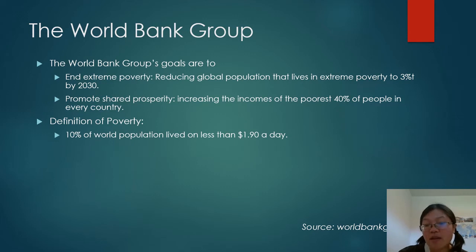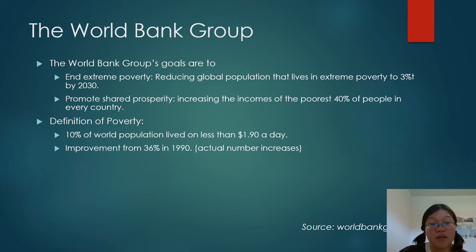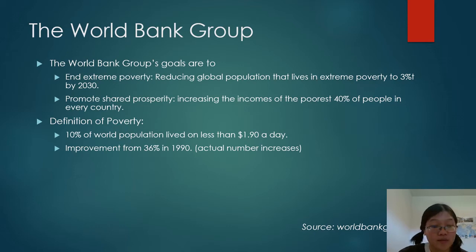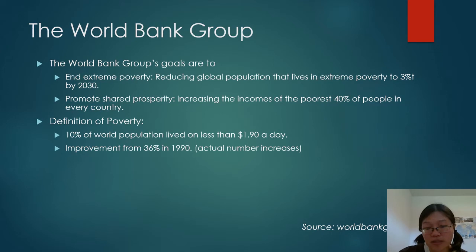This is how they define poverty: people who live on less than $1.90 a day. According to them, 10% of the world population currently lives under that line. This is actually a significant improvement from 30 years ago when 36% of the world's population lived under the poverty line. However, the actual number of people living in poverty has increased because the world population has grown quite exponentially since 1990.